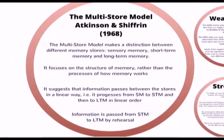This tutorial is going to focus on the multi-store model of memory by Atkinson and Shiffrin. There are three parts to the multi-store model: sensory memory, short-term memory, and long-term memory. It focuses on the structure of memory rather than on the processes of how memory works, and it suggests that information passes between the stores in a linear way — progressing from sensory to short-term and then to long-term memory. Information is passed from short-term to long-term memory by rehearsal.